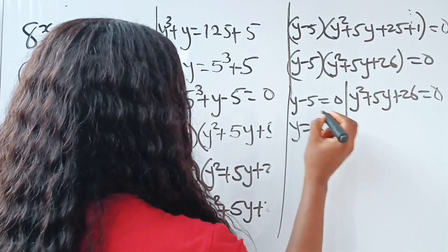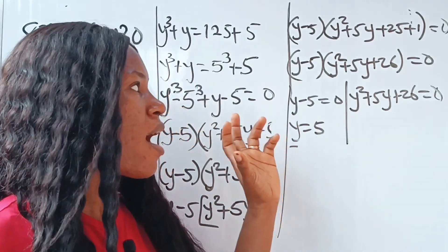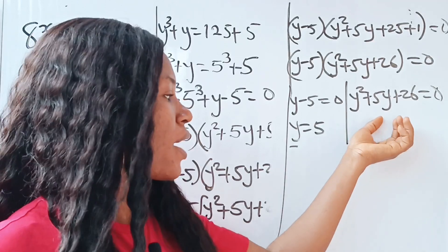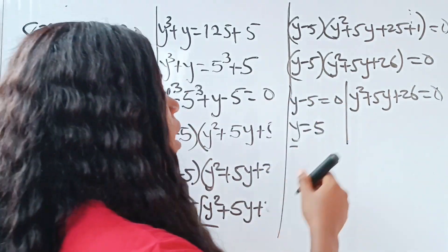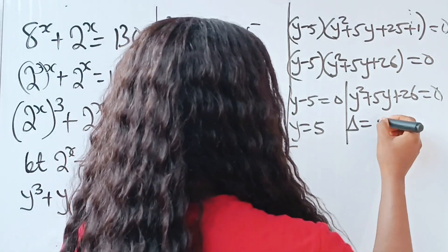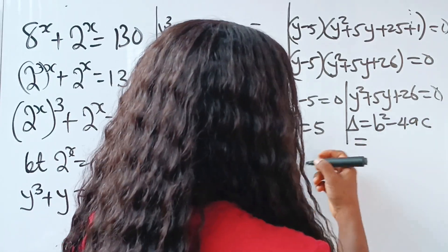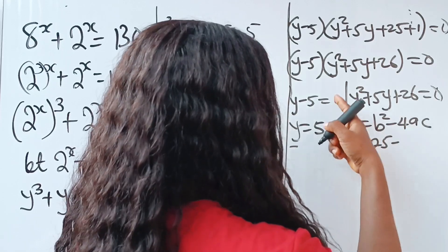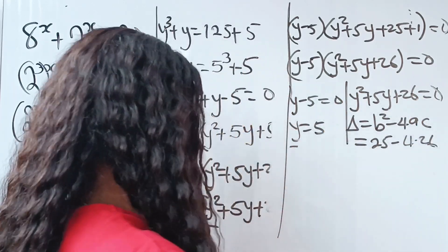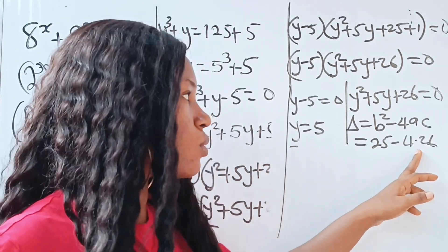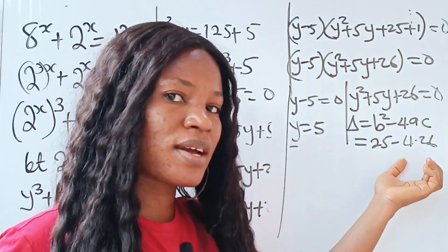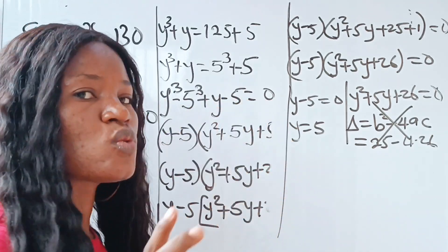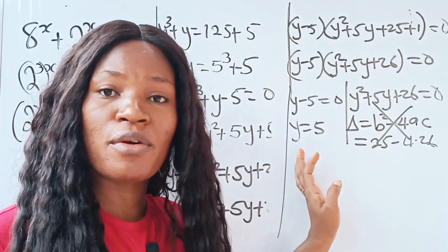From the first factor, y is equal to 5. Now, since our x is real, let's check whether the second factor gives real or complex roots. The discriminant is b squared minus 4ac. Our b is 5, so b squared is 25. Then 4 times 1 times 26 is bigger than 25, so the discriminant is negative — meaning we get complex or imaginary roots. So this means y equals 5 is the only real root.